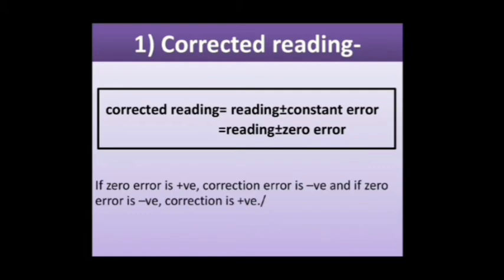Corrected reading can be calculated using: actual reading plus or minus constant error. If zero error is positive, the correction is negative. And if zero error is negative, the correction is positive.